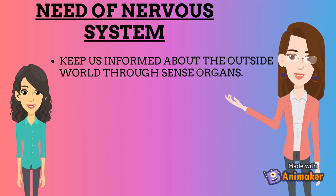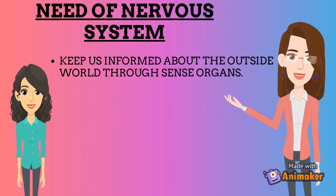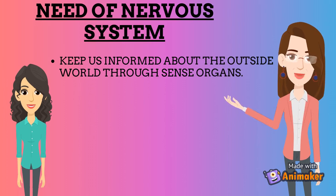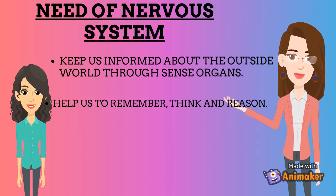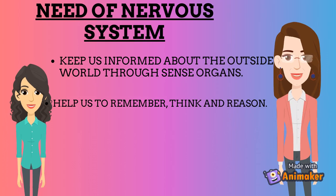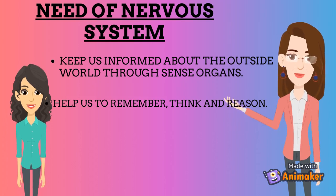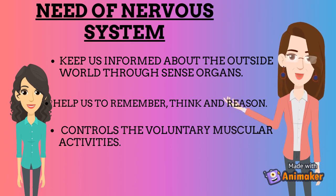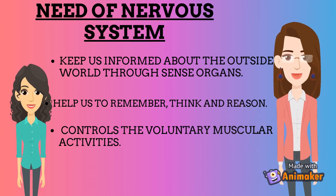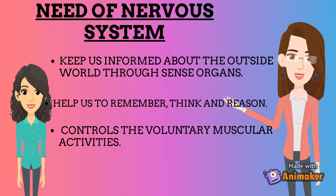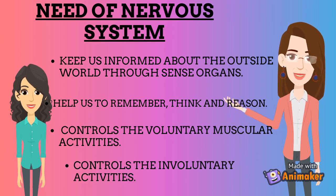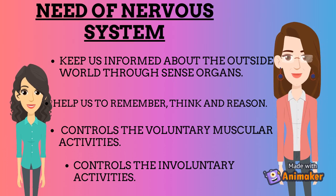The sense organs are our nose, ears, eyes, skin, and mouth. The nervous system also enables us to remember, think, and to reason out. It controls and harmonizes all voluntary muscular activities — for example, running or even holding a book in your hand while reading it.